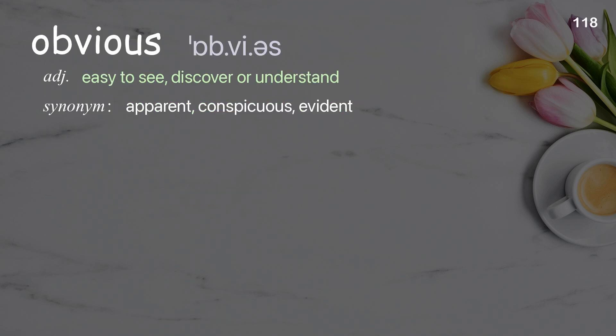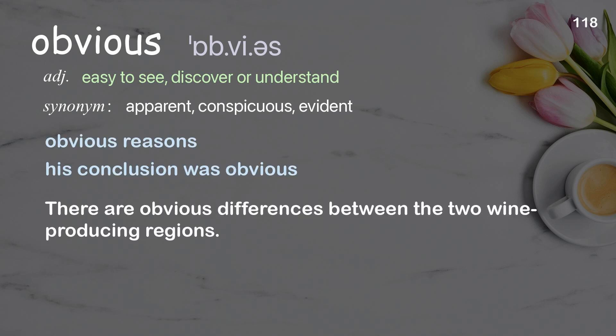Obvious: easy to see, discover, or understand. Examples: obvious reasons, his conclusion was obvious. There are obvious differences between the two wine-producing regions.